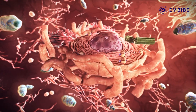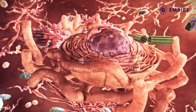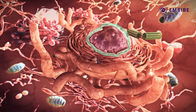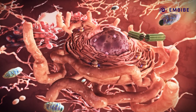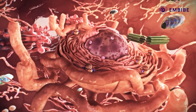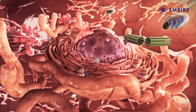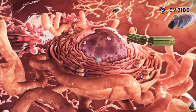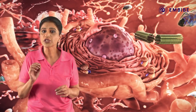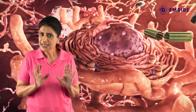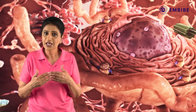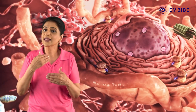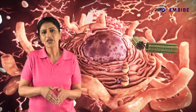In the center of the cell we see the third most important part, which is the nucleus. The nucleus is separated from the cytoplasm by the nuclear membrane, which surrounds and protects it. The pores we can see on the nuclear membrane are the nuclear pores, which selectively allow the exchange of molecules between the cytoplasm and the nucleus.